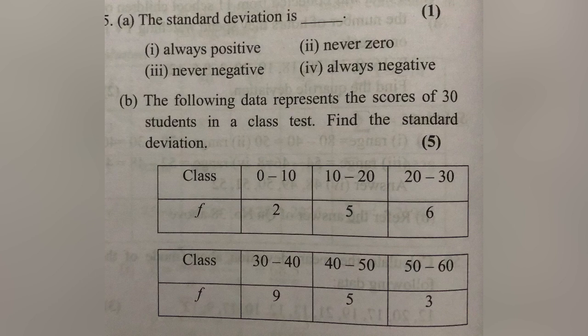The following data represents the scores of 30 students in a class test — find the standard deviation. This is a grouped frequency distribution. The formula is the square root of (sigma f·x² divided by N) minus x-bar squared. We calculate the mid value, then find f·x and f·x².